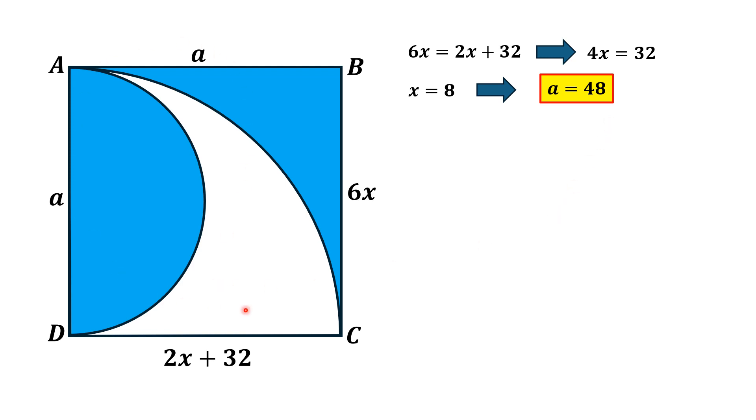Now we have to find the area of this blue shaded region. So blue shaded area is equal to area of this square minus area of this quarter circle plus area of this semicircle.